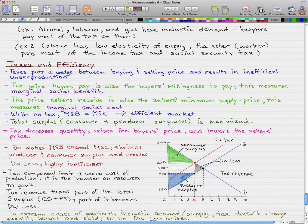That, again, is highly inefficient, and the tax component isn't really a social cost of production. It is the transfer of resources to government, and tax revenue takes part of the total surplus, which is the consumer surplus plus the producer surplus, and I'll fill that in right now.